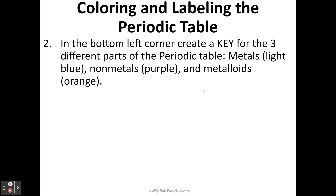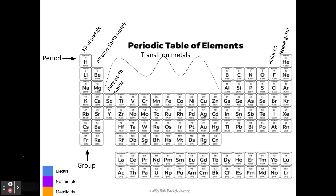The next thing we need to do is create a key. In the bottom left corner of your periodic table, you're going to create a key for the three different parts of the periodic table. Your metals we are going to use a light blue colored pencil. Please don't use a marker because we do need to be able to still read the periodic table. So we're going to use colored pencils or crayons. Your metals are going to be light blue, your non-metals are going to be purple, and the metalloids are going to be orange. Just in the bottom left-hand corner, using your colored pencils, create a light blue square, a purple square, and an orange square, and label those metals, non-metals, and metalloids.